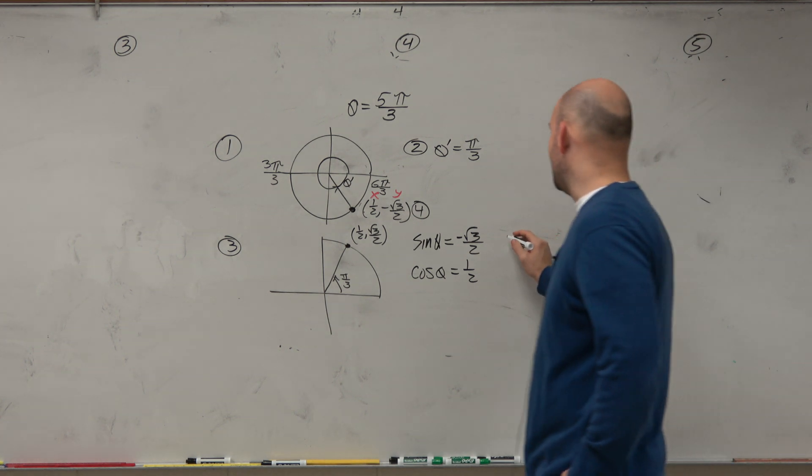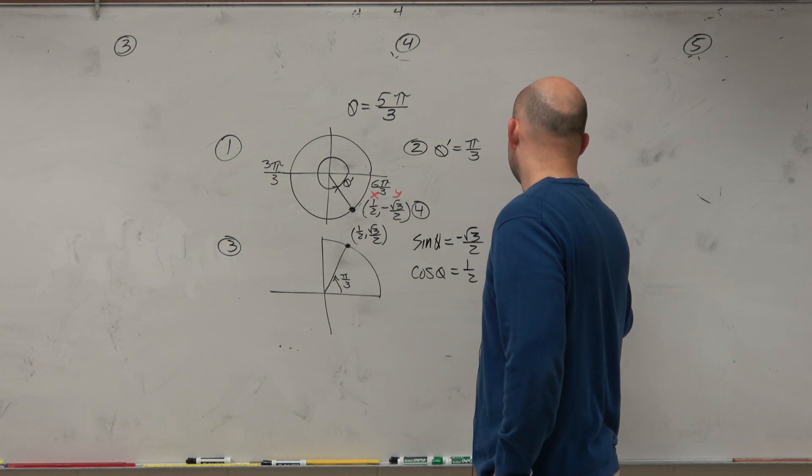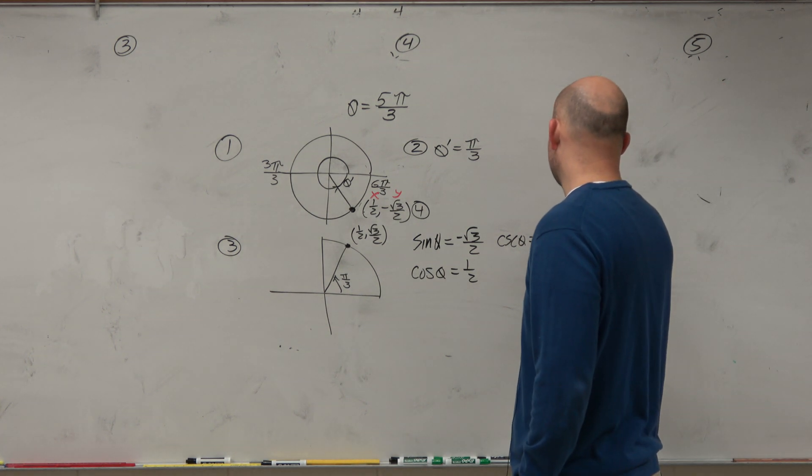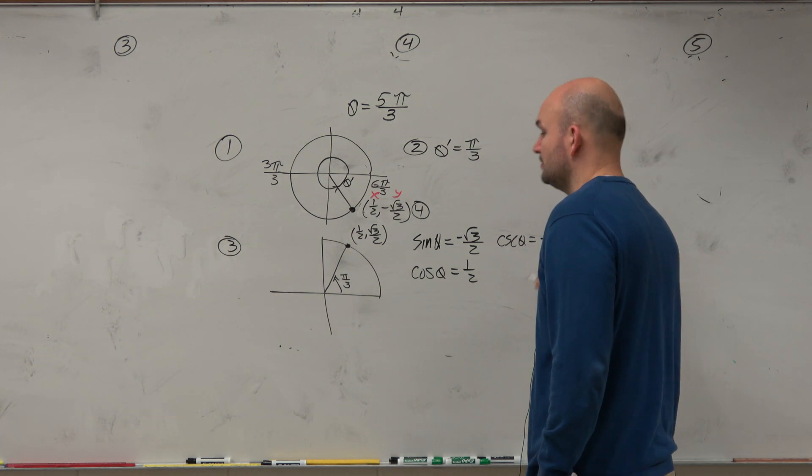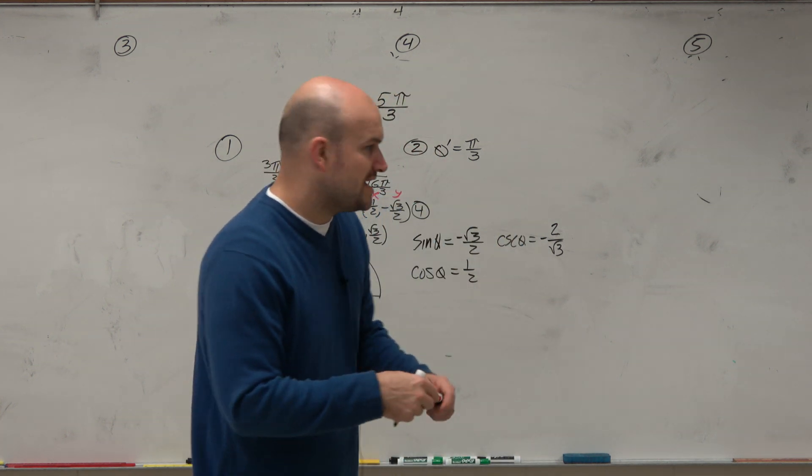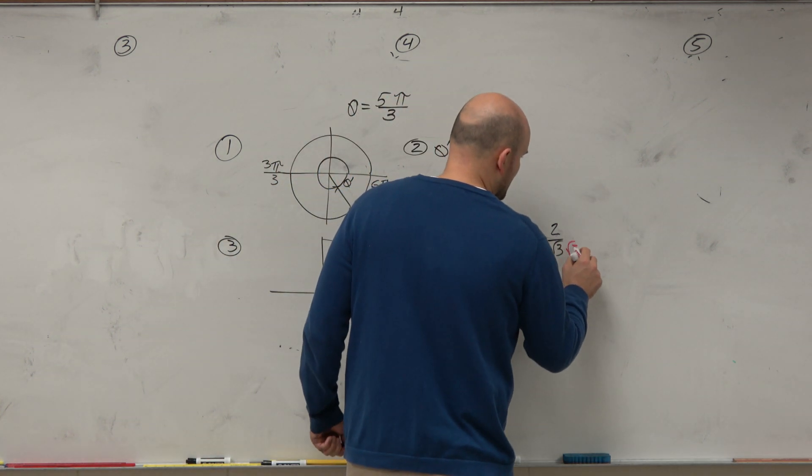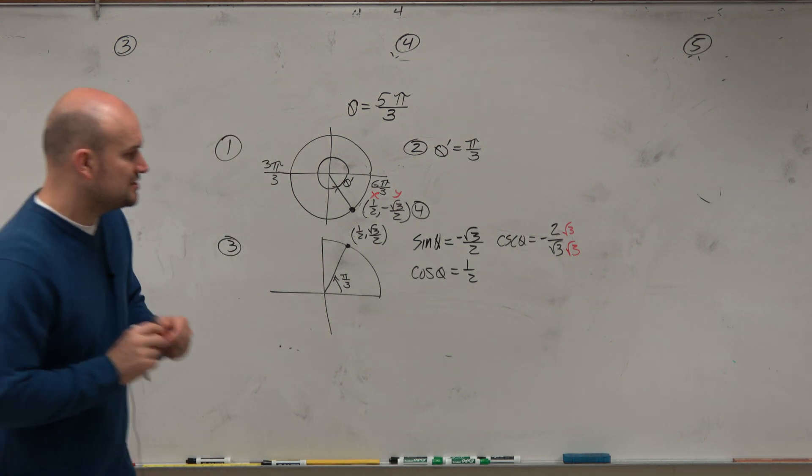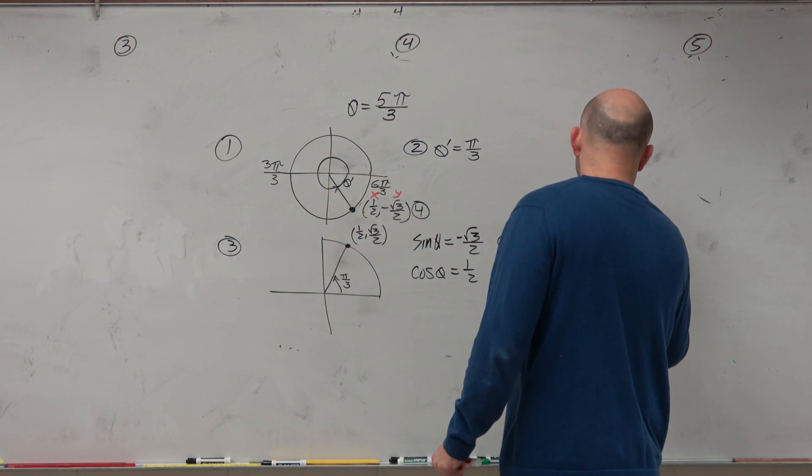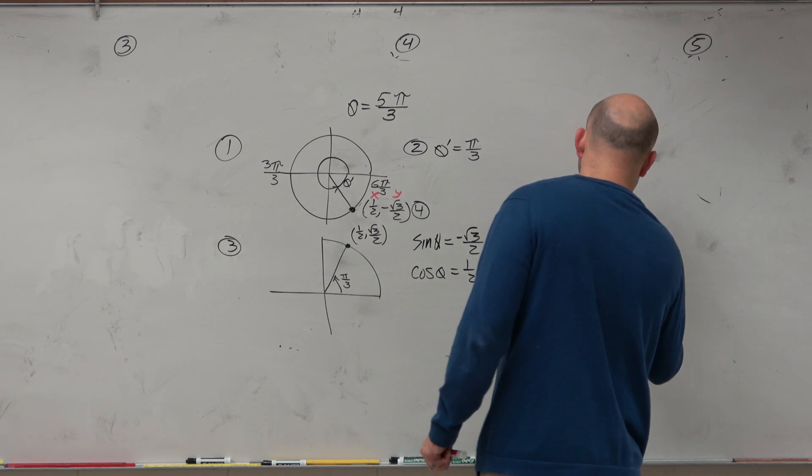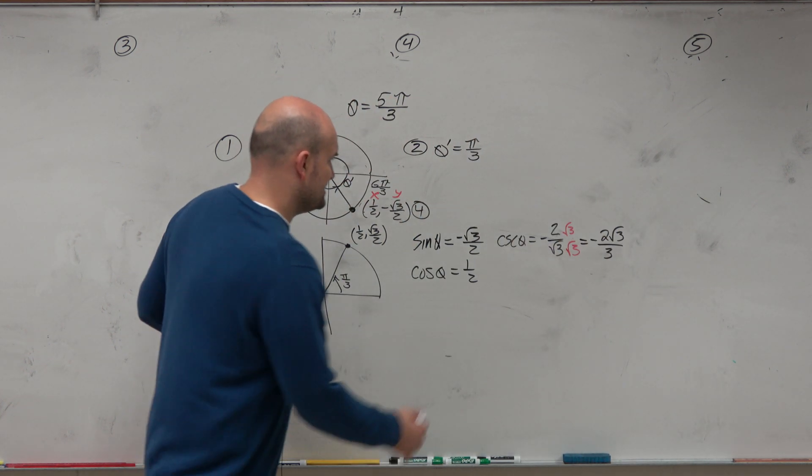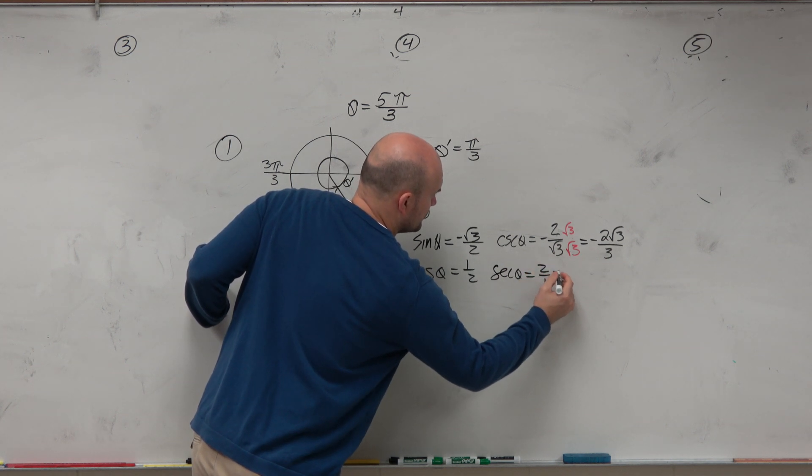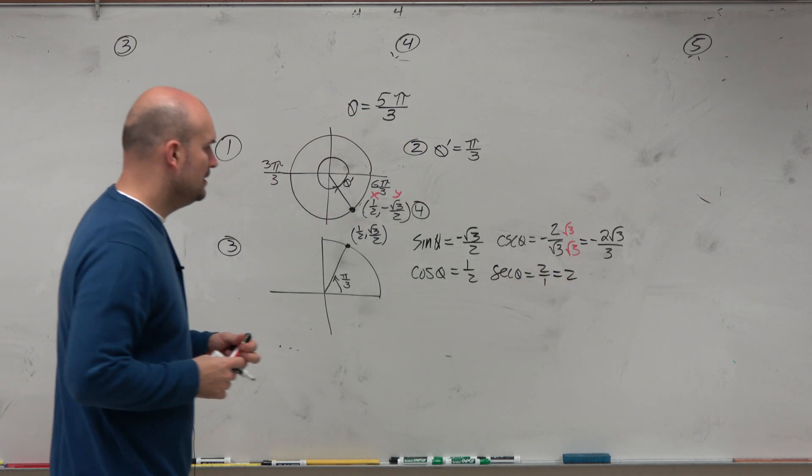The cosecant of θ, which is the reciprocal of this. So that's going to be negative 2 over radical 3. And again, I'll do one rationalizing the denominator, just to kind of refresh your brain. To get the radical off the denominator, we'll multiply by the square root of 3 on the top and the bottom. So we'd get negative 2 radical 3 over 3. For the secant, that's just going to be 2 over 1, which is equal to 2.